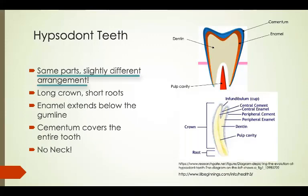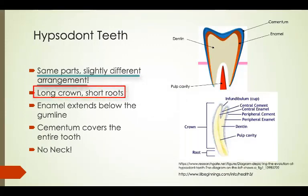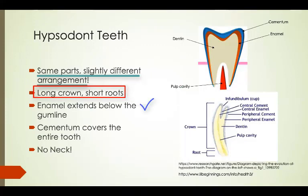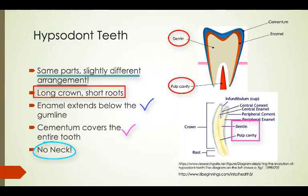Hypsodont teeth have a slightly different arrangement than the layout we looked at with brachydont teeth. For example, the crown and the enamel usually extend below the gum line, hence making the crown longer than the root. The cementum layer covers the entire tooth. Also, the hypsodont tooth does not have a neck or any constricted portion. Note the layering order of the dentin and pulp cavity are the same as with brachydont teeth.